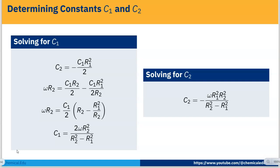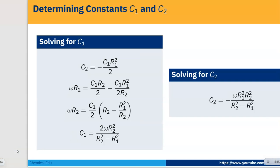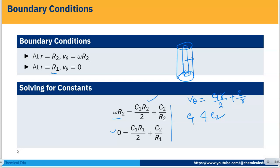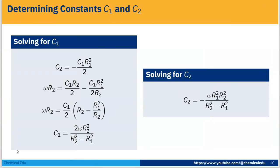Substituting C₂ into the first equation: ω·R₂ = C₁·R₂/2 − C₁·R₁²/(2·R₂). Simplifying, we get: C₁ = 2ω·R₂²/(R₂² − R₁²). Then: C₂ = −ω·R₁²·R₂²/(R₂² − R₁²). Substituting C₁ and C₂ back into the velocity equation and simplifying gives the velocity profile.